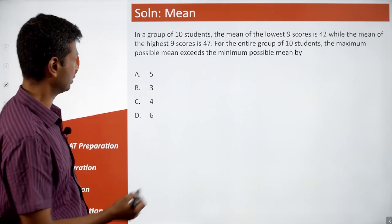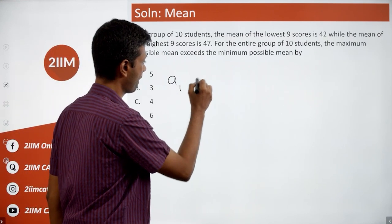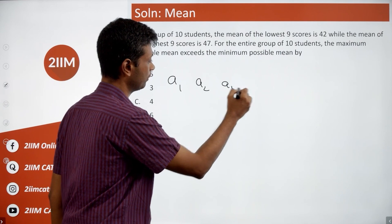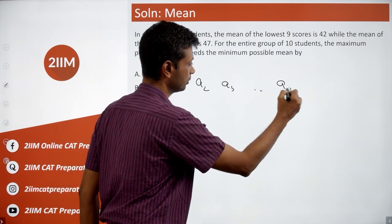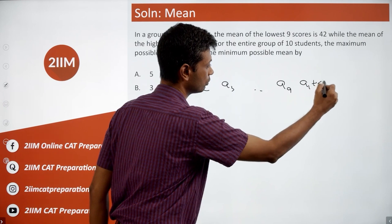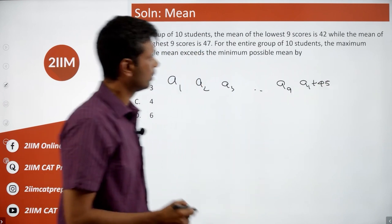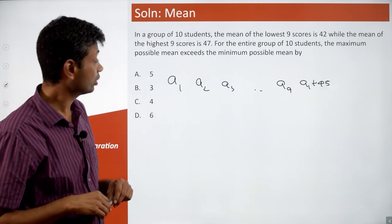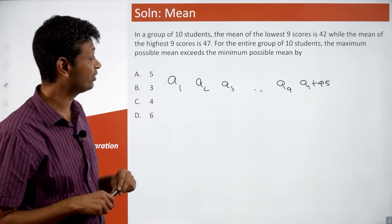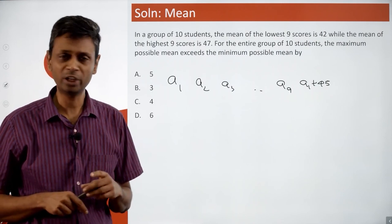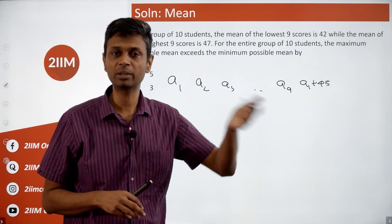Let's rewrite it: we have a1, a2, a3, all the way to a9, and a10 is a1 plus 45. For the entire group of 10 students, we need to find the maximum possible mean and the minimum possible mean.